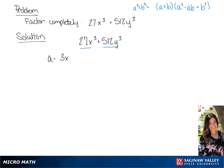Now we're going to find the b term by taking the cube root of 512y cubed. We'll get 8y. Now we're going to plug this into the formula that's at the top right-hand corner. And we will get 3x plus 8y times 9x squared minus 24xy plus 64y squared.